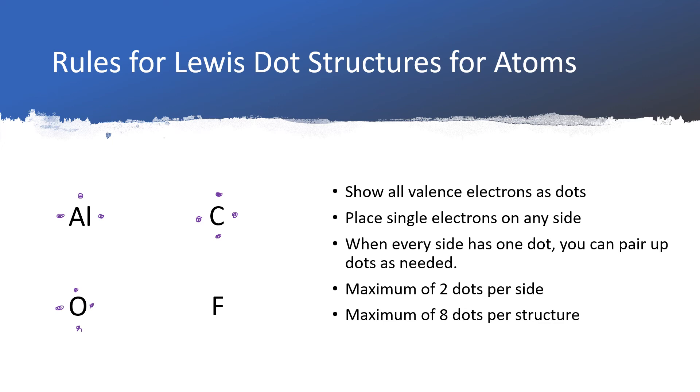Now we'll have to start pairing them up. So I'll put a pair on the top and a pair over on the right side. It really doesn't matter where we put the pairs versus the single electrons, but no matter how you write it for oxygen, there should be two pairs of electrons and also two single electrons.